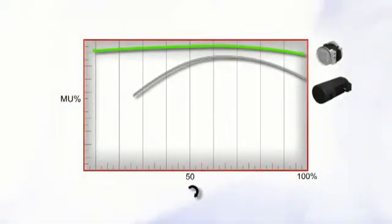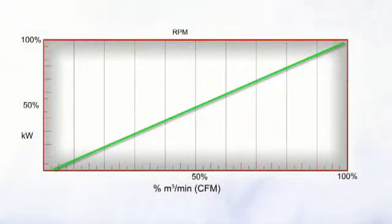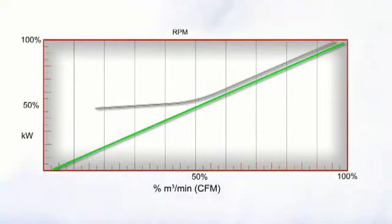Induction motors lose efficiency as they reduce speed to part load the compressor. This forces many competitive machines to operate at less than optimal conditions through the majority of the applied speed range.